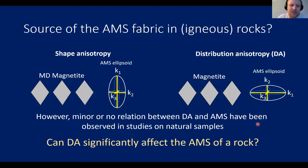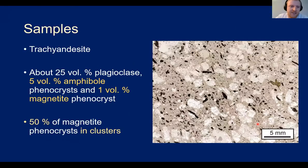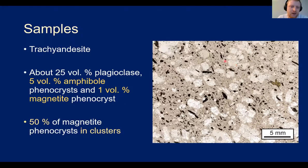The question I want to answer is: can distribution anisotropy significantly affect the AMS of a rock? To study this I chose a trachyandesite — a porphyritic trachyandesite containing phenocrysts of plagioclase and amphibole, with one volume percent magnetite phenocrysts, 50% of which occur in clusters. This gives potential to see if distribution anisotropy can be significant in controlling AMS.